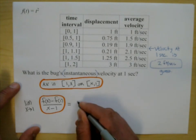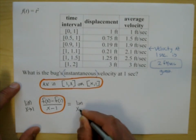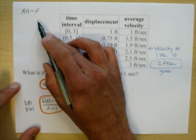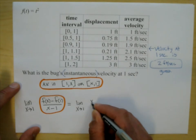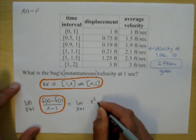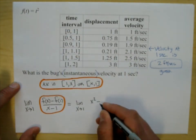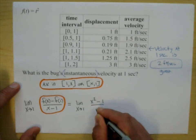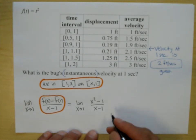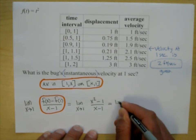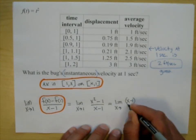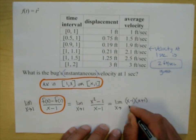This is the limit as x approaches 1. F of x is x squared, minus F of 1 which is 1 squared, so minus 1, all over x minus 1. We've done limits like this in our book. The top can be factored into (x minus 1)(x plus 1), and on the bottom you have an x minus 1. So basically here you have a hole in the graph.